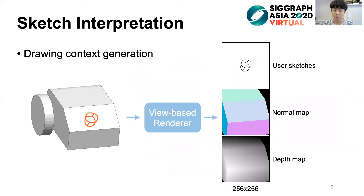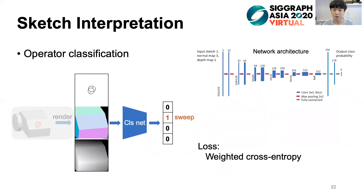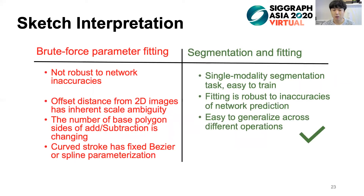To get the contextual maps, we render the current shape into depth and normal maps using a view-based renderer. All input and output maps in our system have square sides of 256. We then employ a simple VGG-like deep neural network to predict operation type. Here, the sweep operator is found. To supervise the training, we use the weighted cross-entropy loss. For parameter fitting, there are different technical choices, such as brute force parameter fitting, but there are some difficulties in our case.